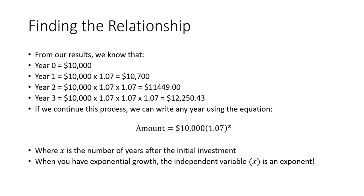And so if we continue this process, we can write the amount any year using this equation. Where the amount is equal to $10,000, the initial amount that we invested, and then 1.07 is the number that we're going to multiply times, and x represents the year. So for every year, we're going to multiply by another 1.07. One of the main differences between a linear relationship and an exponential relationship is now the independent variable x is an exponent.